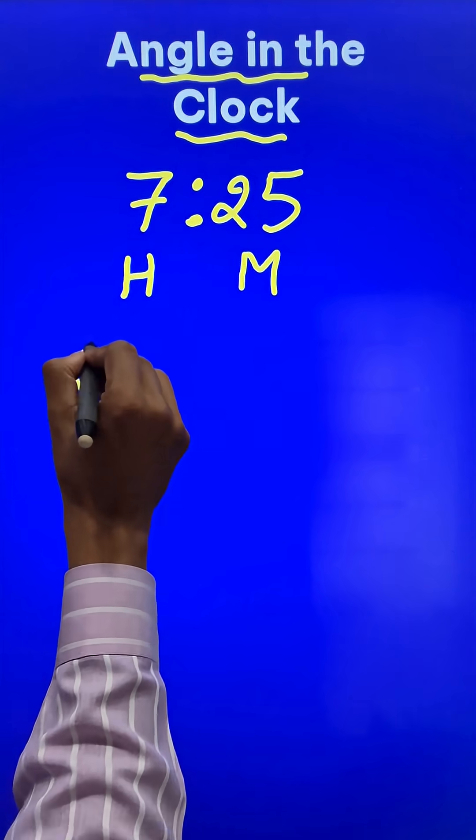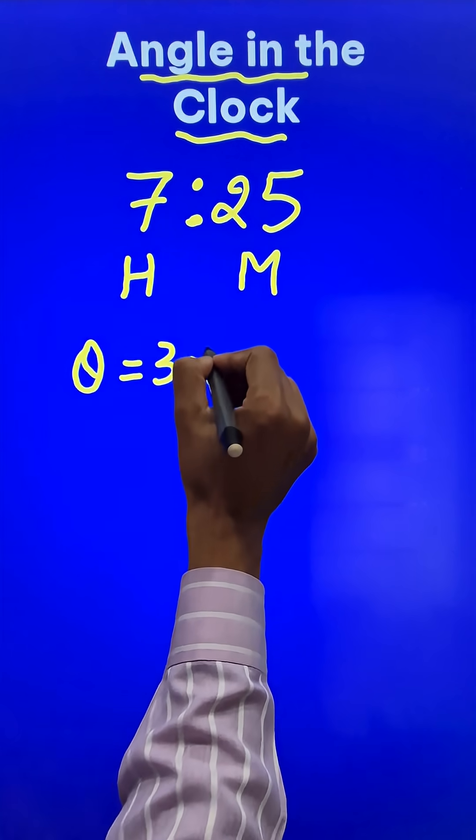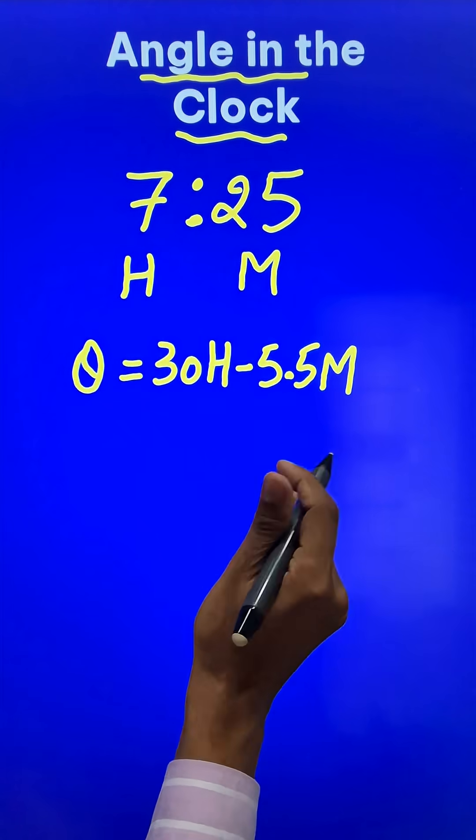Now, this 7 is actually the hours and this 25 is the minutes. If we want to find the angle theta between the minute hand and the hour hand, you just need to use 30 times the hours minus 5.5 times the minutes.